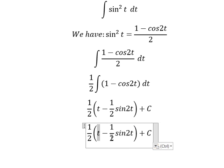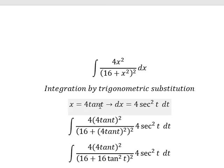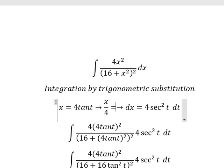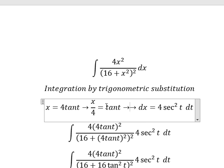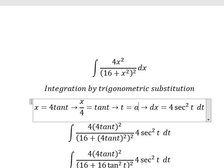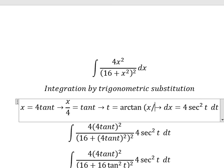t is this one, so we need to divide both sides by 4. And now we have t equals arctan of x over 4. So I will put this one to change for t.